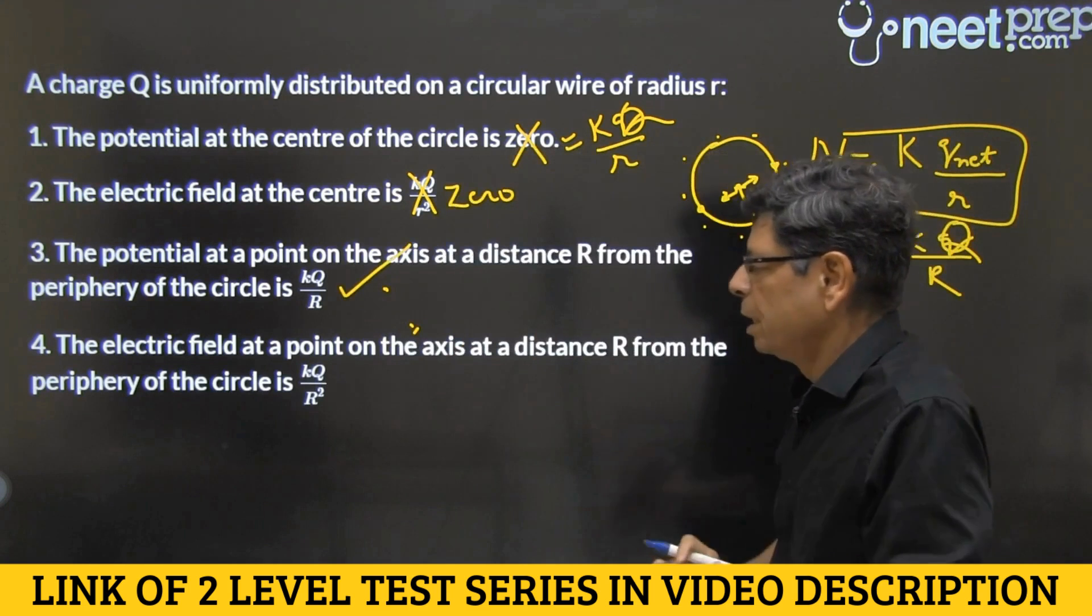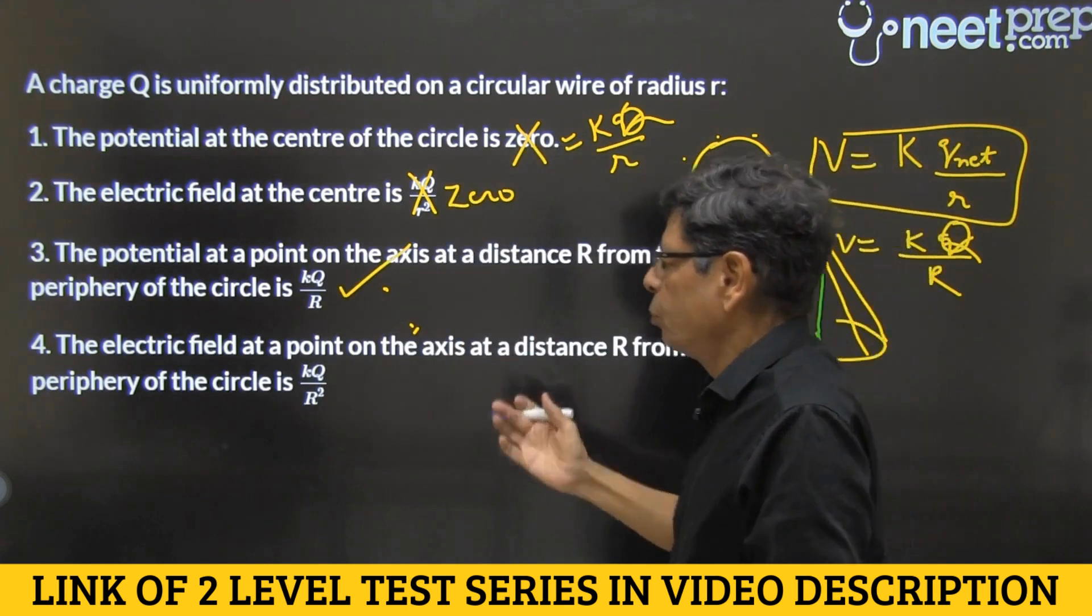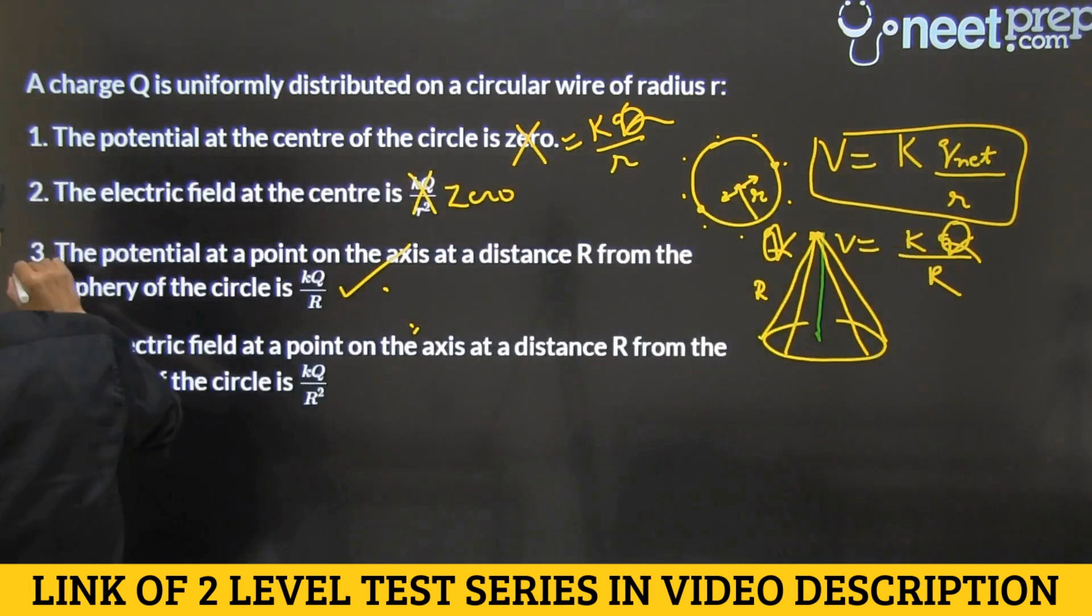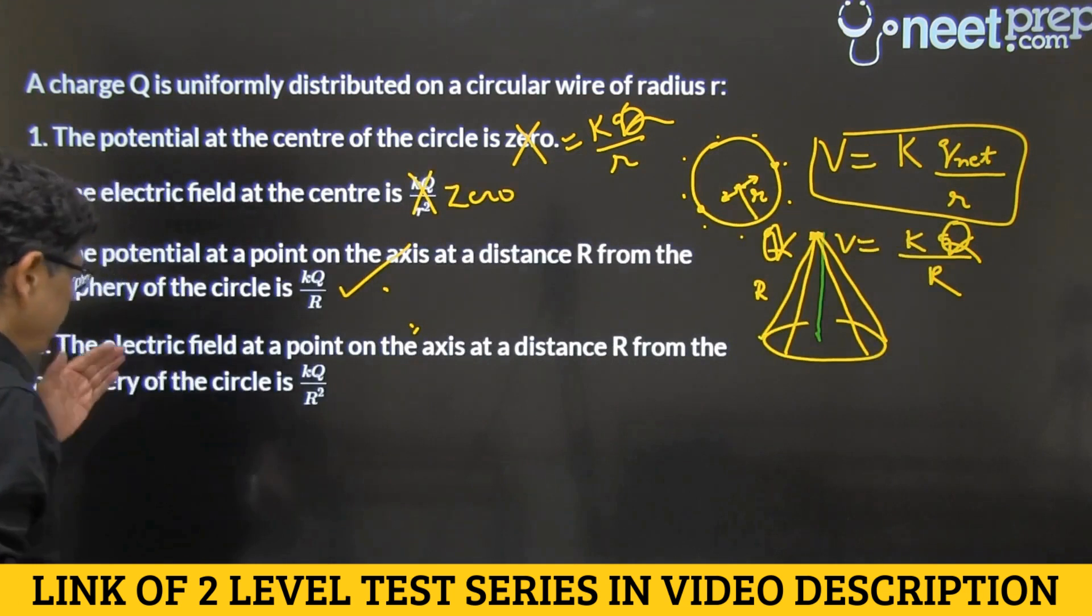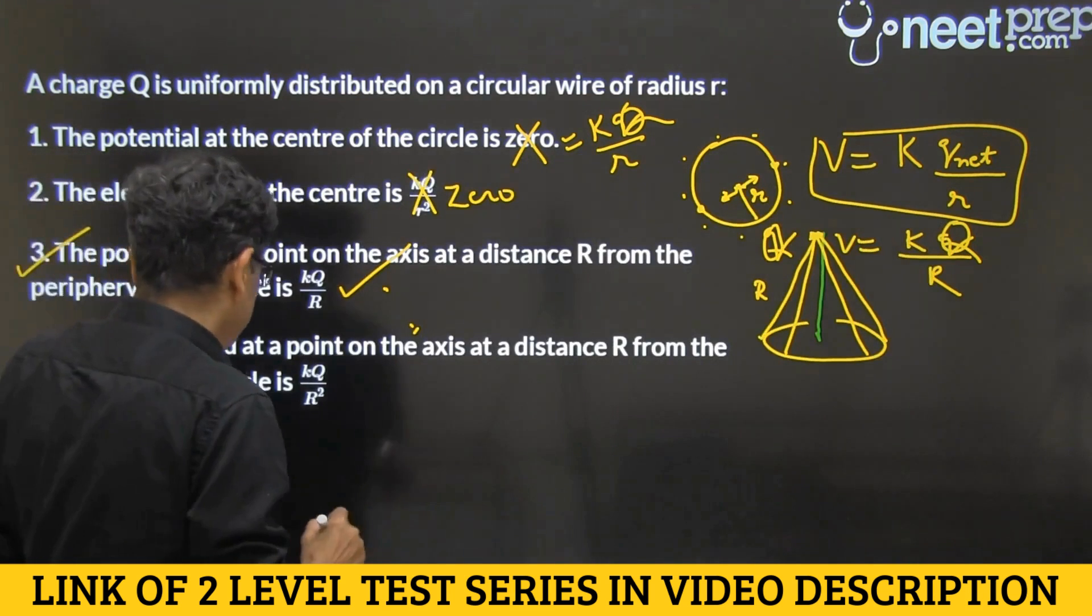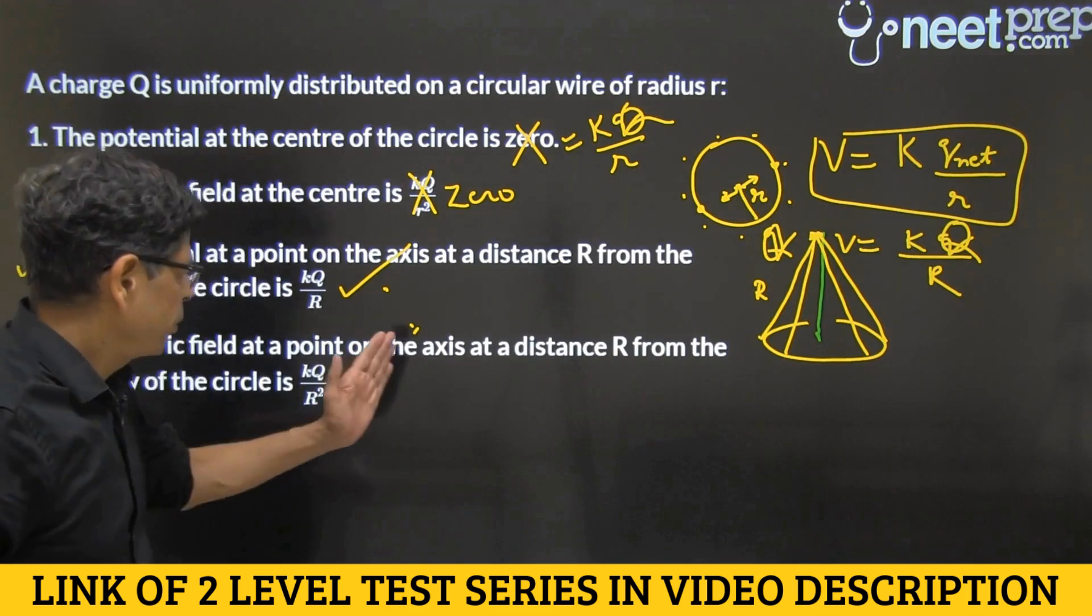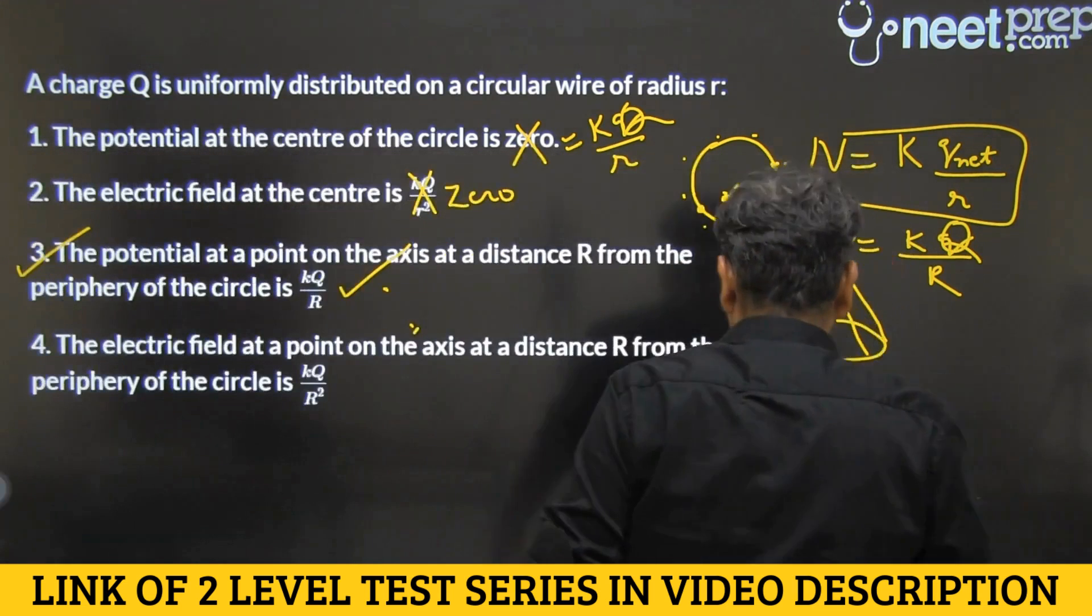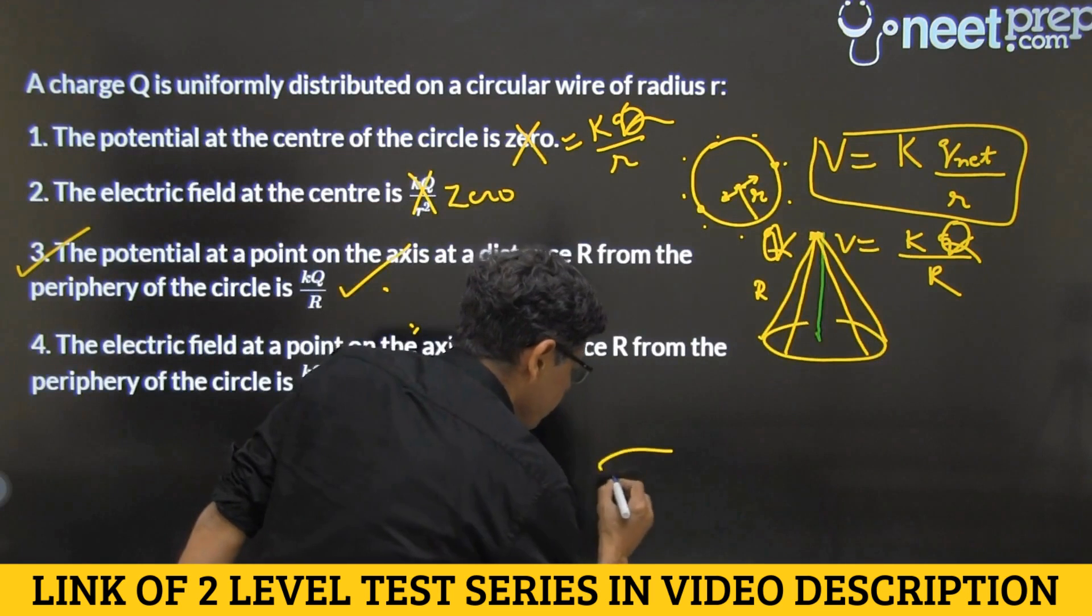Option four says, so option four ko dekhna nahi hai, option three sahih answer hai, legin phir bhi ek baar check karte hai, kya likhha ho hai, so ye kahte hai, electric field at a point on the axis, same place per electric field is.